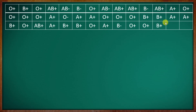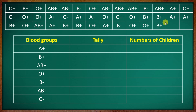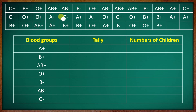We are going to discuss the table and the data. We will count the number of children for each blood group. For A positive, counting gives us 3 plus 5, which is 8 children with A positive.